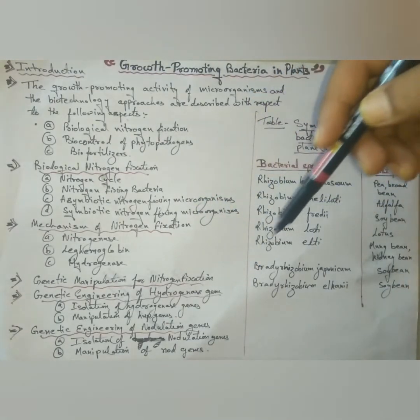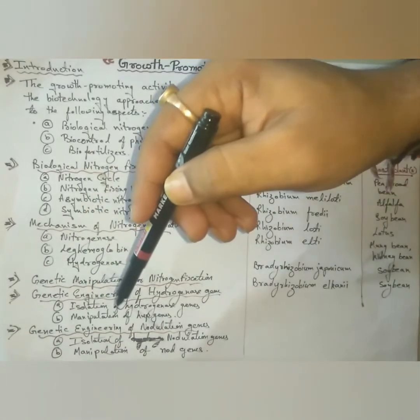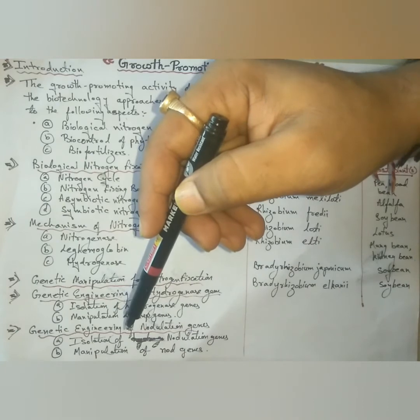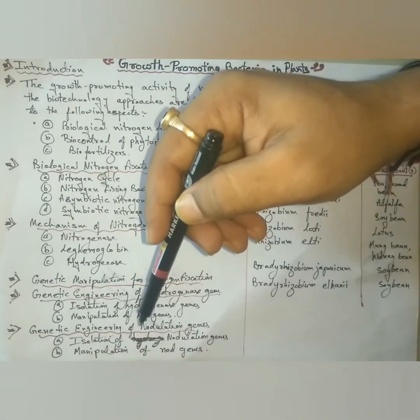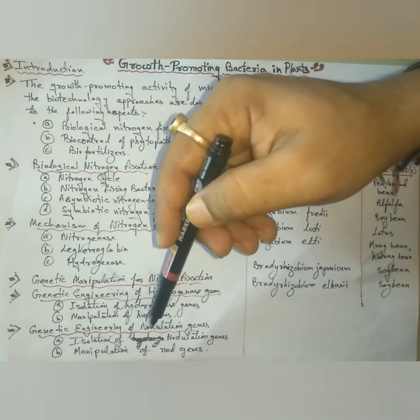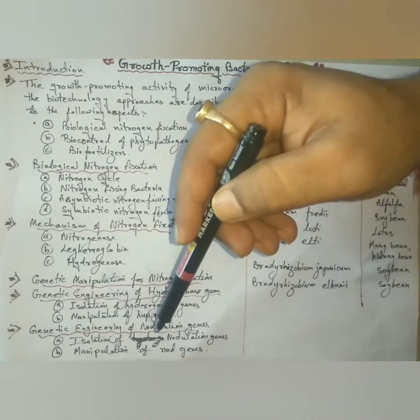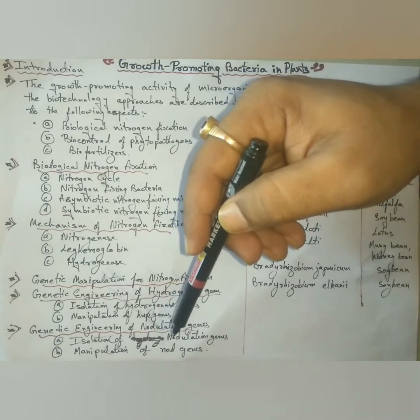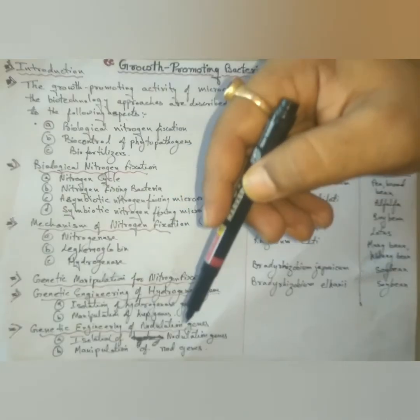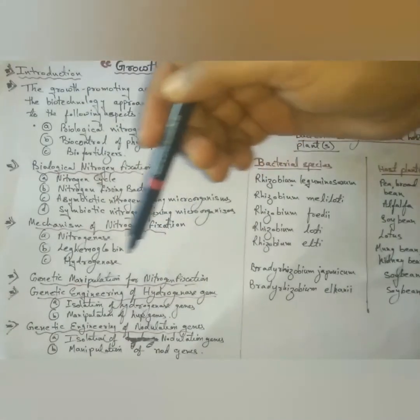Next, manipulations of HUP genes. The hydrogenase HUP genes have been introduced into rhizobium leguminosarum. This HUP plus strains of bacteria when inoculated into legumes resulted in higher nitrogen fixation.